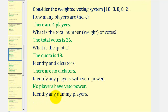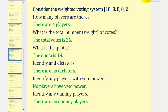We also want to identify any dummy players — a dummy player is a player that's never essential to reach quota. But we just showed that if player two, three, and four form a coalition, eight plus eight would be 16, and therefore player four is required to reach quota, so player two is not a dummy player. In this case, there are no dummy players.